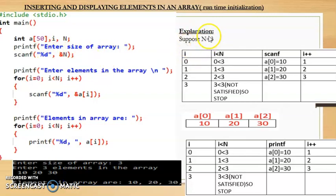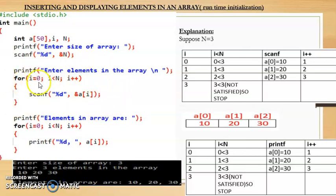Say suppose the user enters n as 3, meaning the user has to enter 3 values inside the array. Then it will ask the user to enter the elements. Since n is 3, more than one element, we use a for loop. We initialize i to 0 because array values start from 0, and loop till i less than n. Inside the loop, a scanf statement takes values from the user and stores them inside the array.